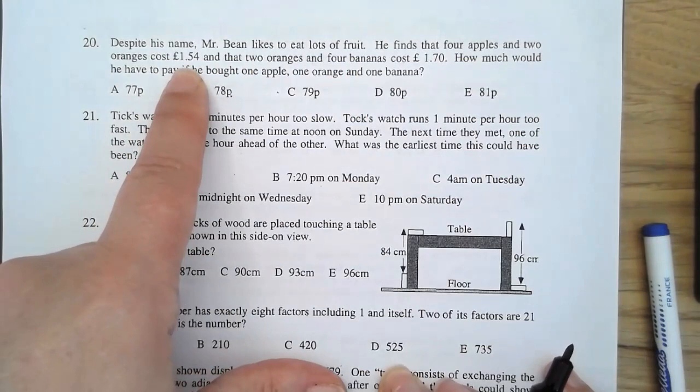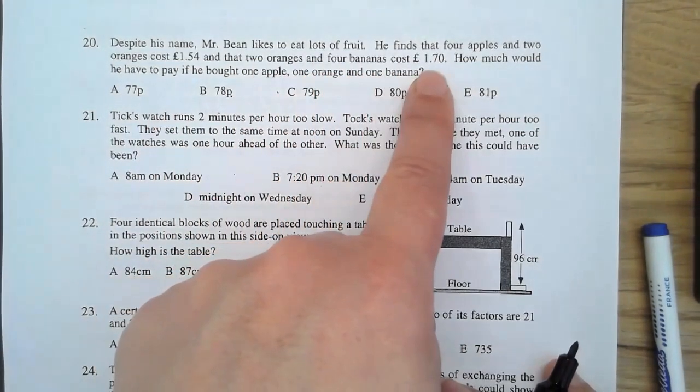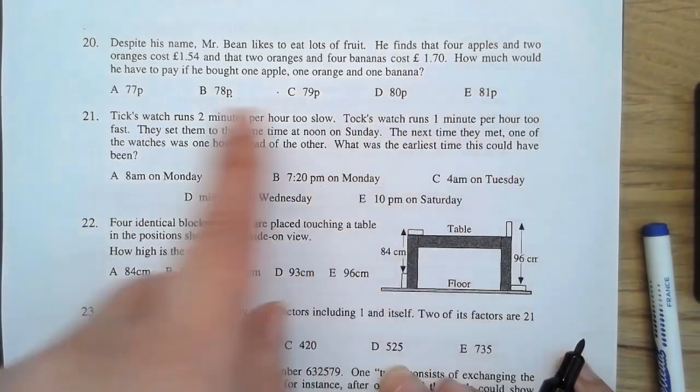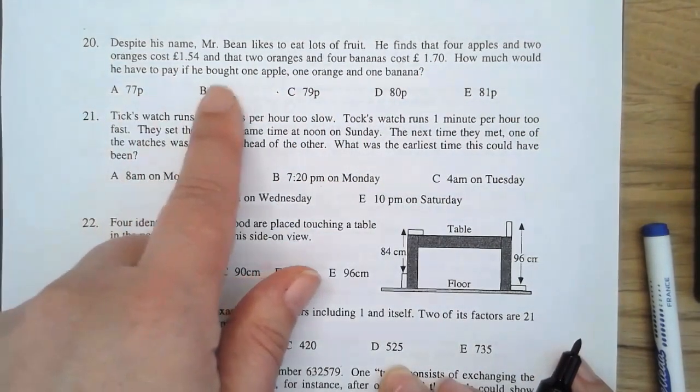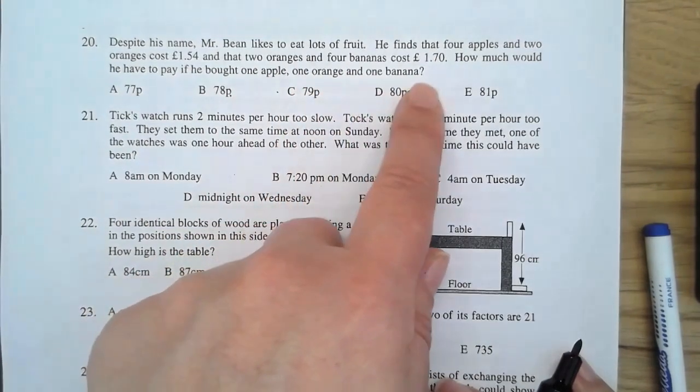You could think about it as dollars or any currency. And that two oranges and four bananas cost £1.70. How much would he have to pay if he bought one apple, one orange and one banana?